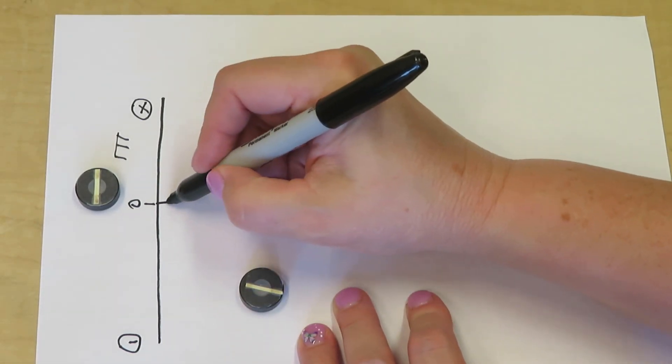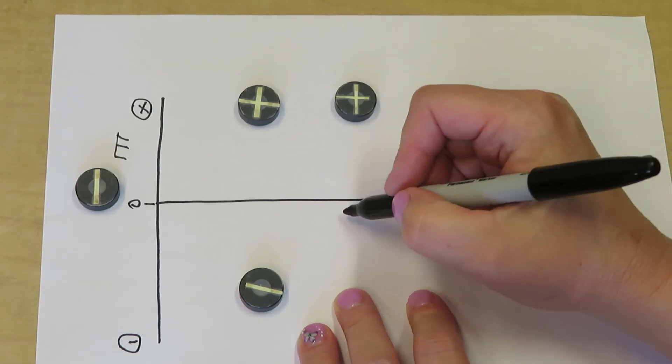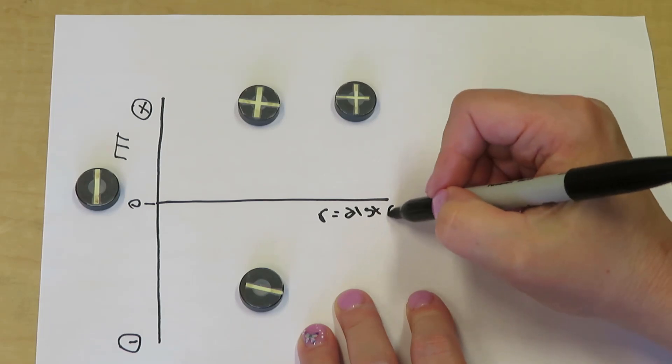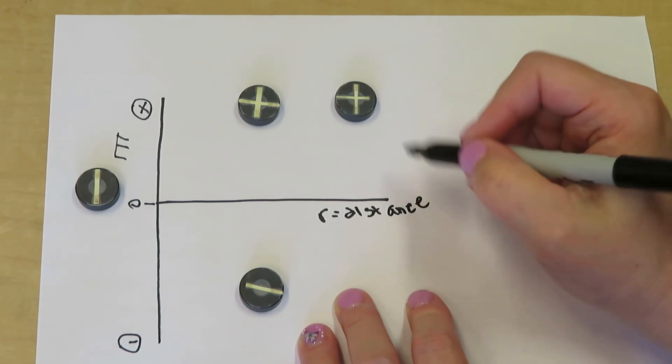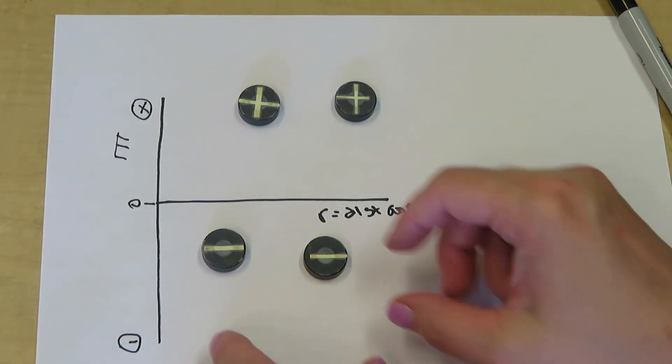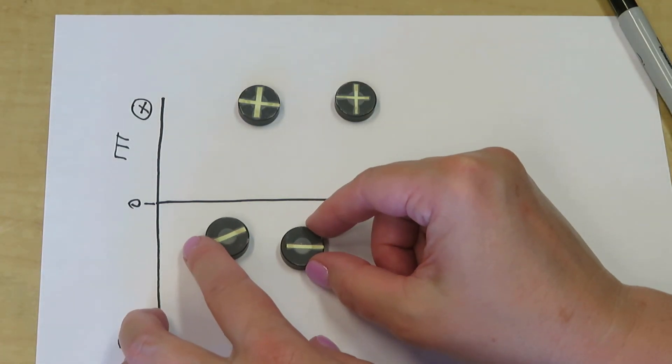And for our x-axis, we have r, which is distance. What we can see is that from far away, the two electrons don't sense each other. So their value is close to zero.